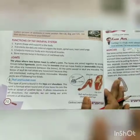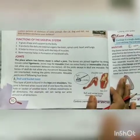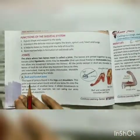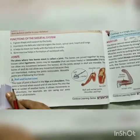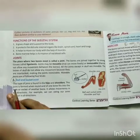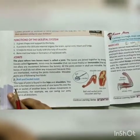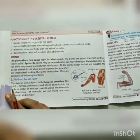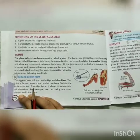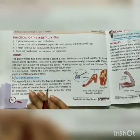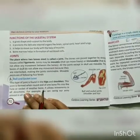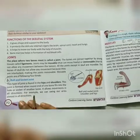Good morning students. This is the second lecture of chapter 8, that is skeletal system and nervous system of class 5 from Cordova Science. In the previous lecture, we had discussed about the skeletal system, in which we discussed the skull, backbone, ribcage and limbs. In this lecture, I am going to discuss about joints and muscles. So let's start.